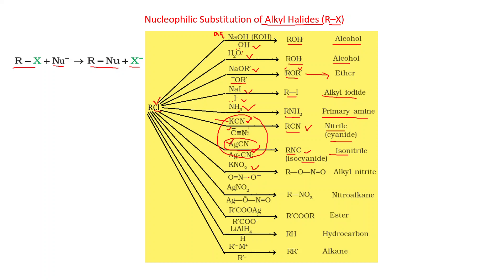With KNO₂, oxygen attacks on the carbon of the alkyl halide to give RONO (alkyl nitrite). With AgNO₂, nitrogen acts as nucleophile to give RNO₂ (nitroalkane). KNO₂ is ionic while AgNO₂ is a covalent compound — this determines which atom attacks. With RCOOAg, the carboxylate ion RCOO⁻ acts as nucleophile to give an ester.